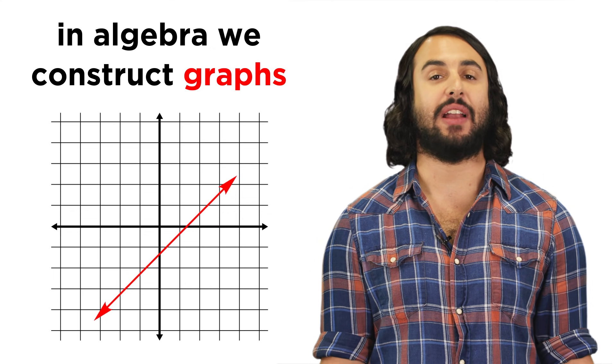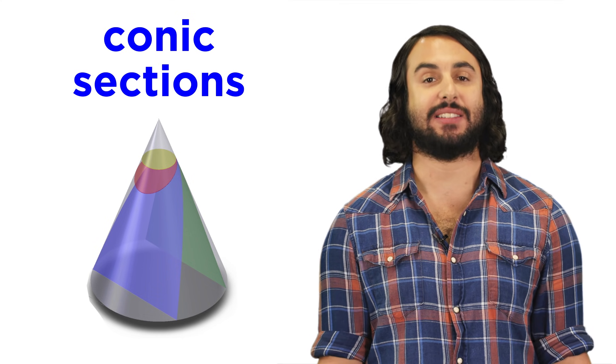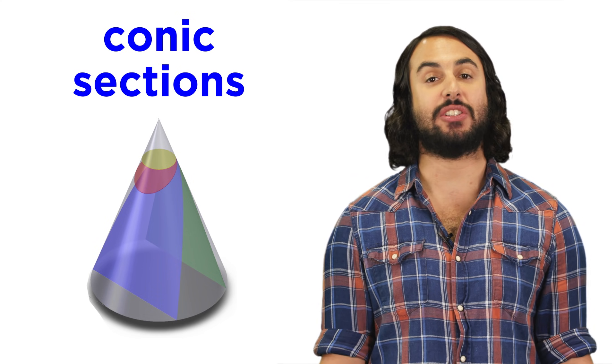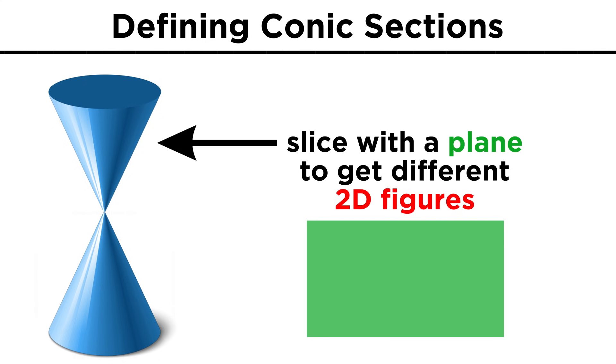In algebra, there are so many things that we could graph, but there is one class of figures called conic sections that will be very important. First, let's learn what this term means. Take this three-dimensional right circular double-napped cone. We can create different two-dimensional figures by taking a plane and swiping through the cone in different ways.